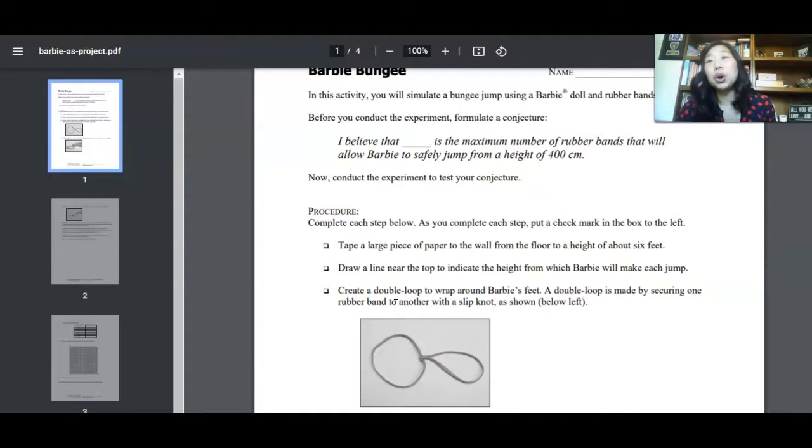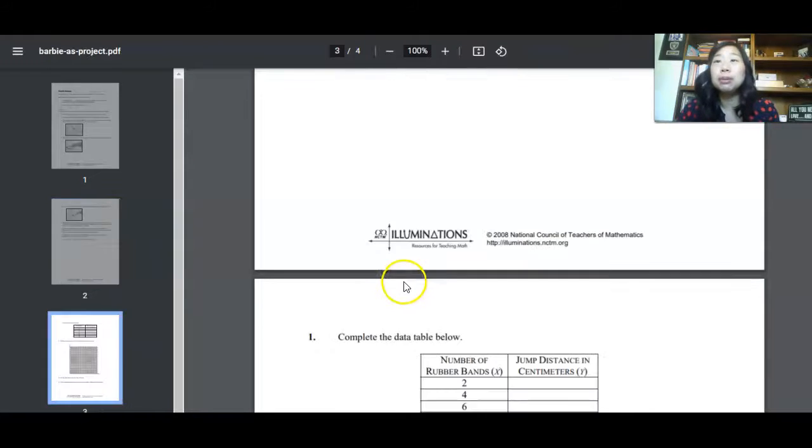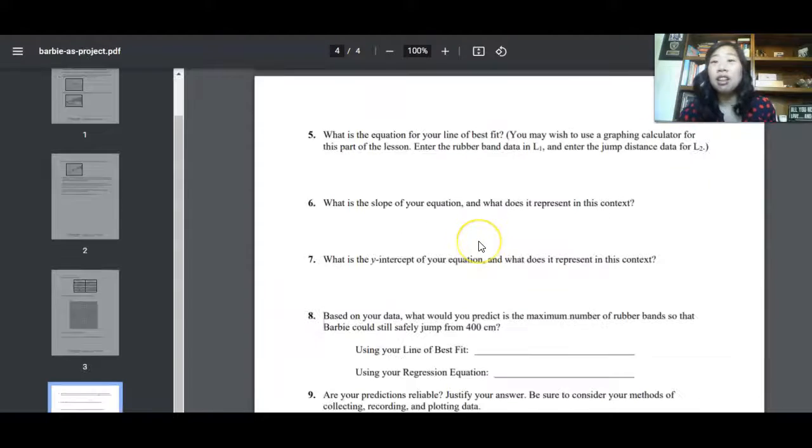I'm not going to go into all the steps on how to use this activity, but it is so fun. Your students will be dropping Barbie from a tall distance. And again, it's really fun. So your students will use Barbie. They will use rubber bands to figure out the number of rubber bands that they think that they need for Barbie in order to jump off of a high building without hitting the ground. And they will create a scatter plot. They will be solving for lines of best fit.